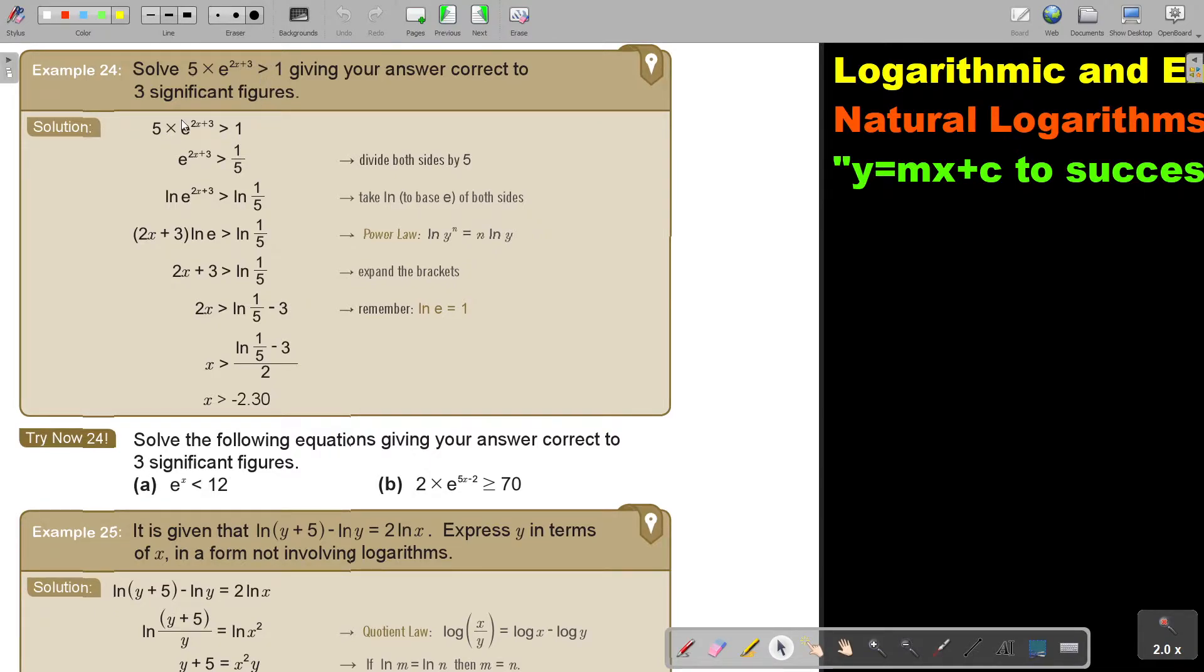We do exactly the same. We isolate this, so we divide by 5 on the other side. We still take ln on both sides due to the e. We don't take logs, we take ln.